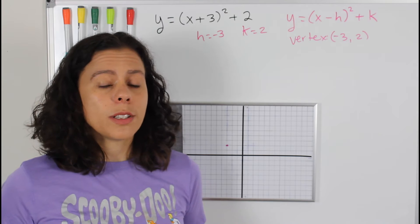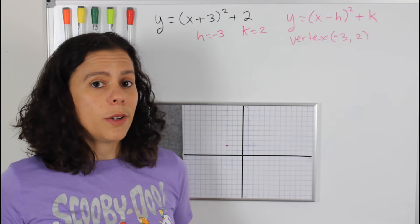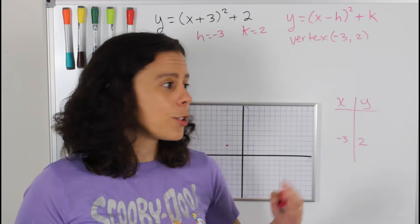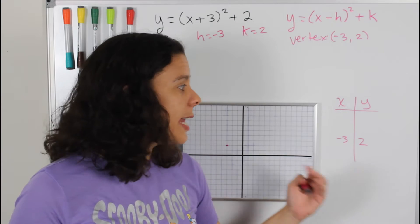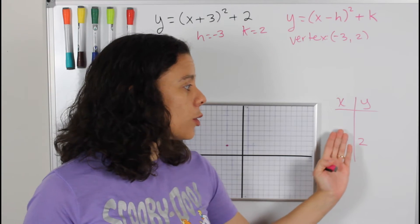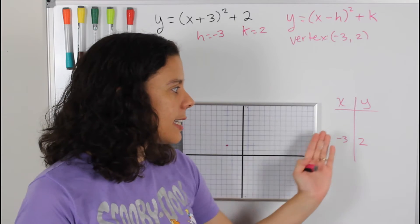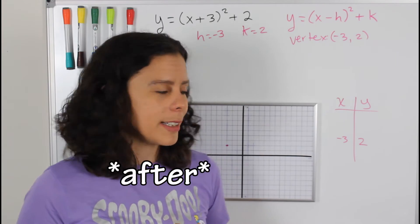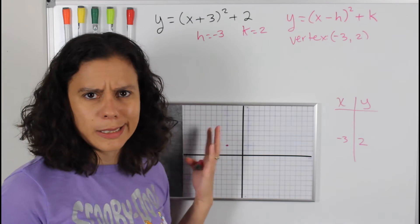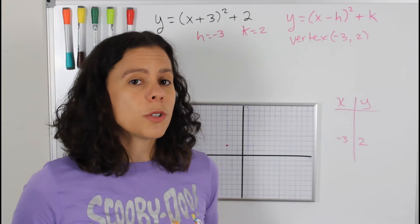And now, how do we find the rest of the points of the parabola? Well, very simple. I personally like to draw this little table on the side. And what I do is I always look for points either before or after the vertex. And in this case, I'm going to look for numbers before the vertex because I don't want to be dealing with those big negative numbers.